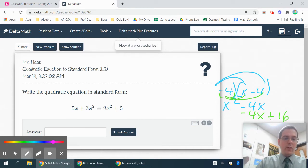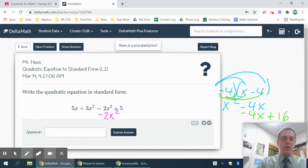Standard form for a quadratic equation means I want everything on the same side, so usually on the left side. So to move variables around, we've done this before, we can subtract the 2x squared from both sides. And I also need to subtract the 5 from both sides. So everything on this side is gone.